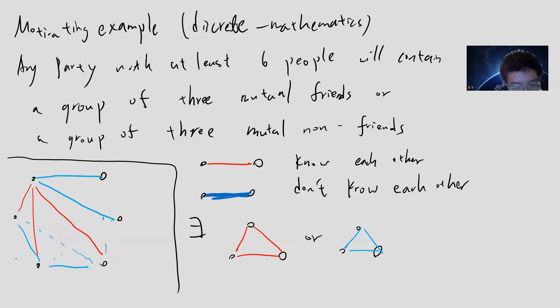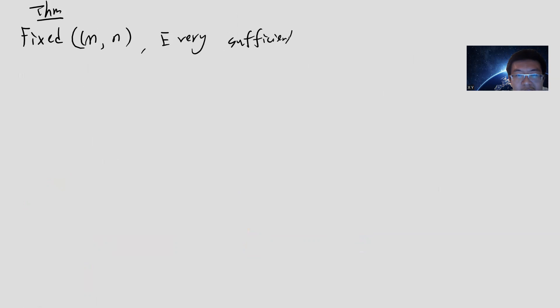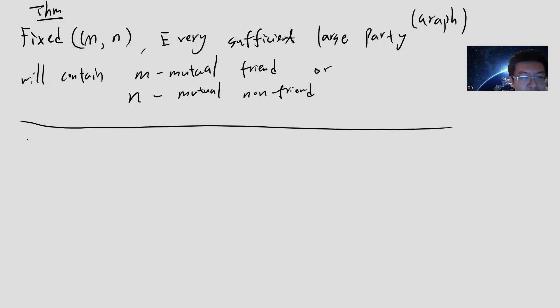So this is the very simple motivating example. In general, one can ask the following question. Fix M and N. We want to claim the following theorem: for every M and every N, a sufficiently large graph will contain M mutual friends and M mutual non-friends. In terms of graph theory, given any graph with the number of vertices large enough,